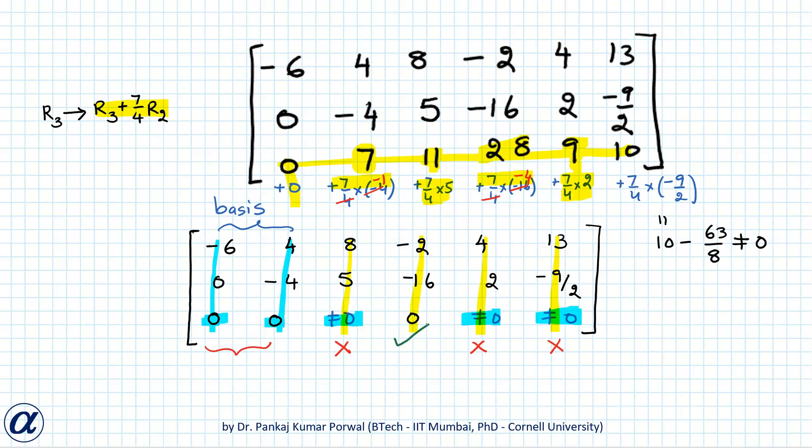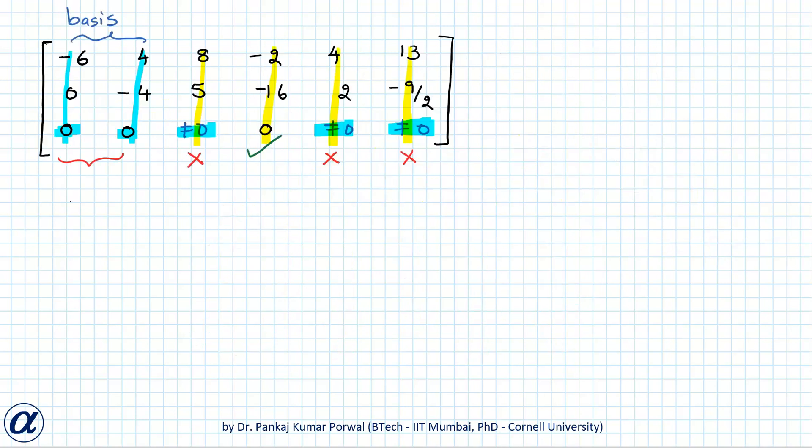The only remaining choice is the column corresponding to option B, which has a zero in the third row, confirming it is linearly dependent on the basis vectors. To find the scalar coefficients, let α and β be such that α·(first basis vector) + β·(second basis vector) = vector B.